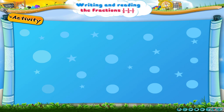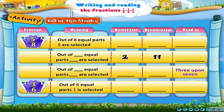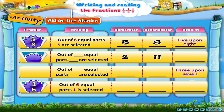Let us now revise what we have learnt. Fill in the blanks. For the first fraction the numerator is five and the denominator is eight. The fraction is read as five upon eight. For the second fraction the numerator is two and the denominator is eleven. So we write and read the fraction as two upon eleven. It means out of eleven equal parts, two are selected.